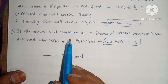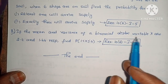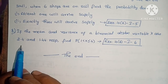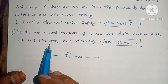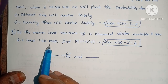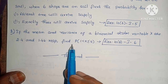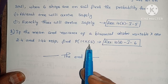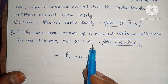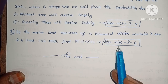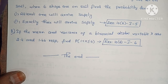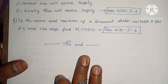If the mean and variance of a binomial variable x are 2.4 and 1.44 respectively, find P(1 < x ≤ 4). Exercise 10, Section I, problem 6.